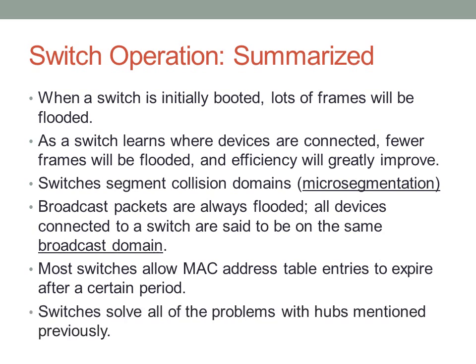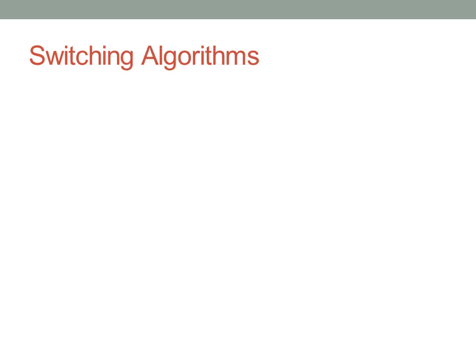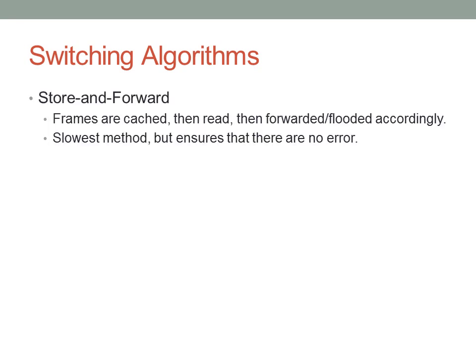Switches solve almost all of the problems with collisions caused by hubs, and have become the de facto standard for network implementation. There are several ways a switch forwards frames from one interface to another. The first is store-and-forward: the switch waits to receive an entire frame, stores it in a temporary buffer, then reads the source and destination MAC address, runs the entire frame through, compares the frame checksum, and sends it out.